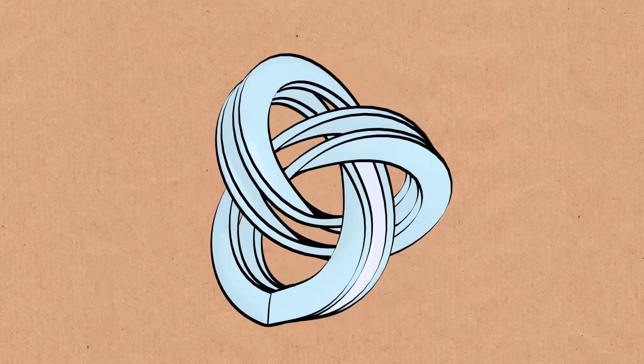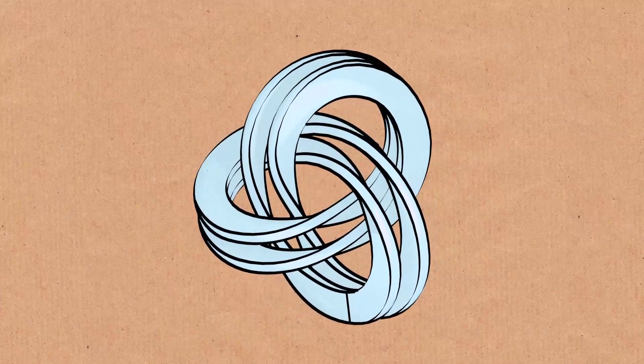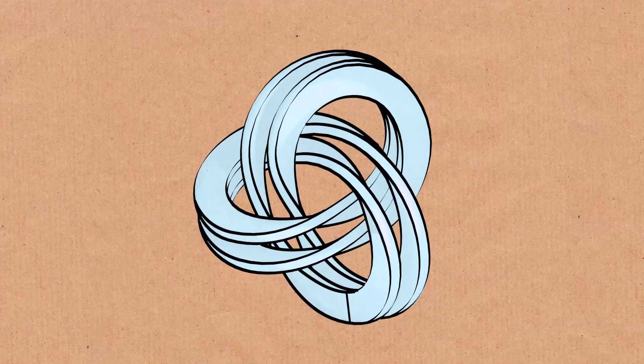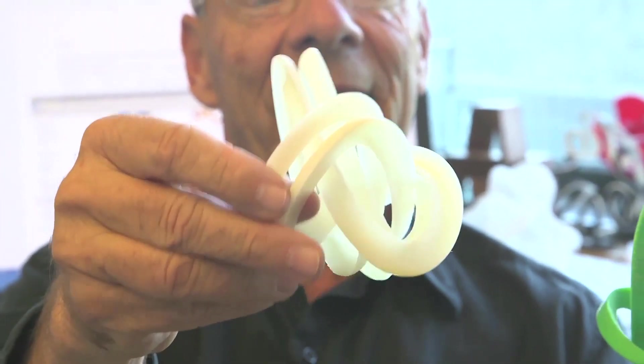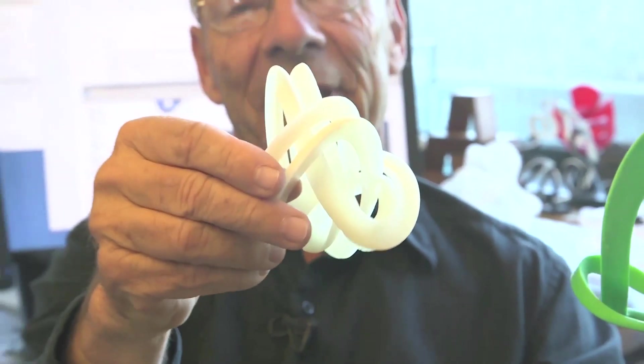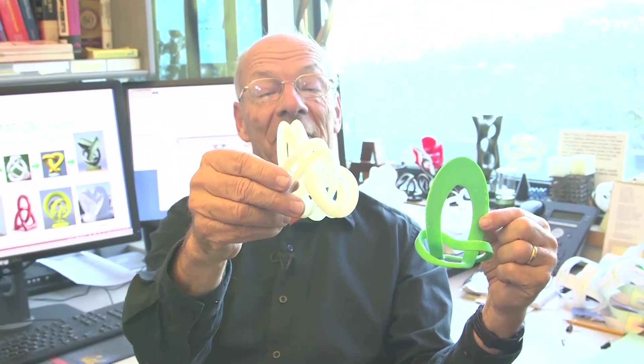And because it's a Mobius band, when I do this, I get a knot that is not really divided. That's why we call it knot divided.